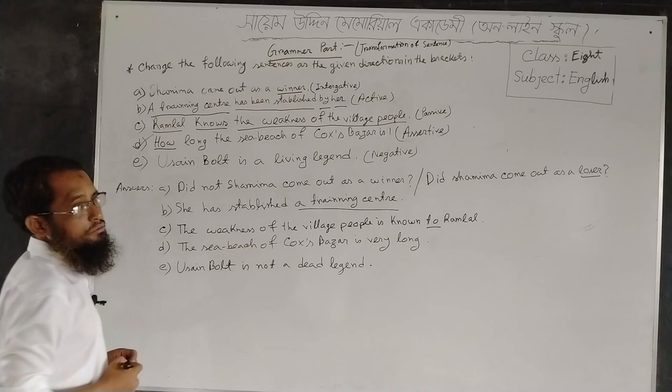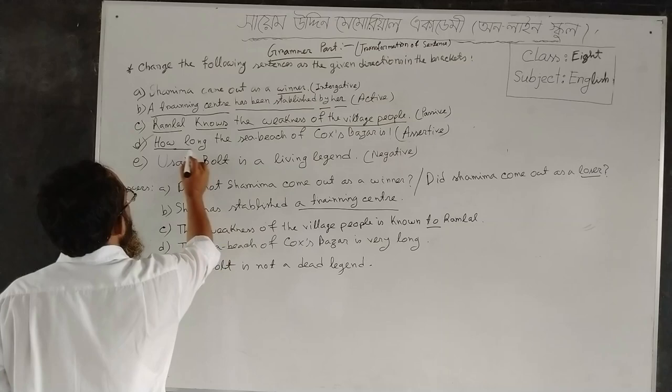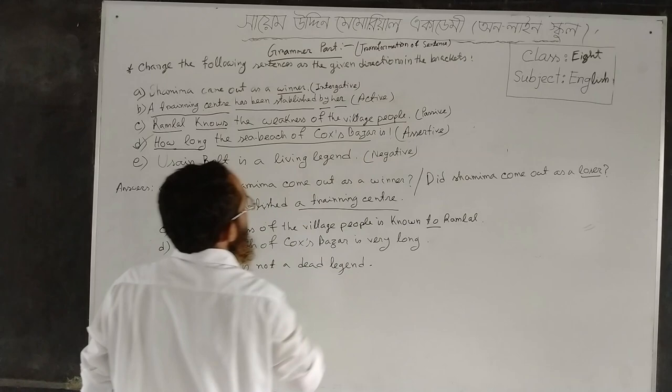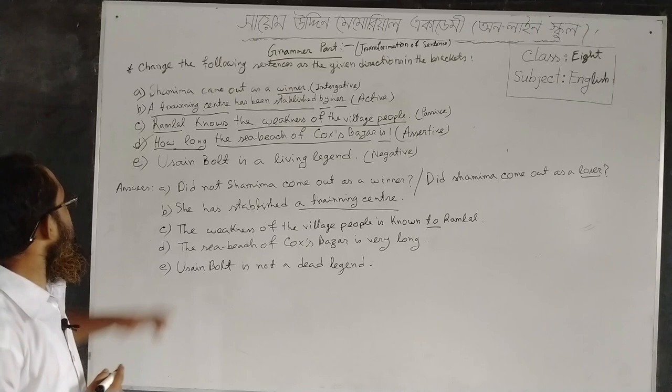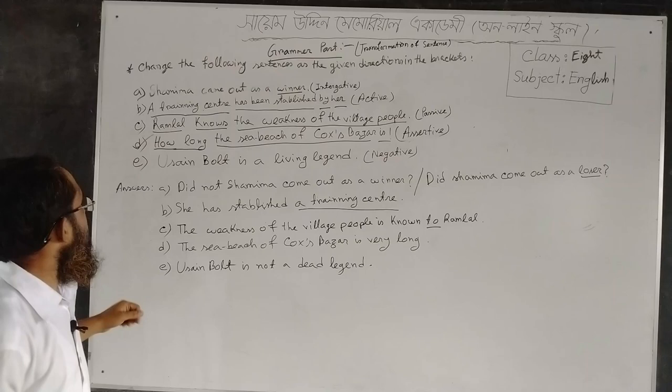'How' is the starting word of this sentence, 'how long' is a phrase, 'the sea beach of Cox's Bazar' is another part, and 'is' is the verb. If you want to change it as an assertive sentence, you have to take the subject first. Here the subject is 'the sea beach of Cox's Bazar'.